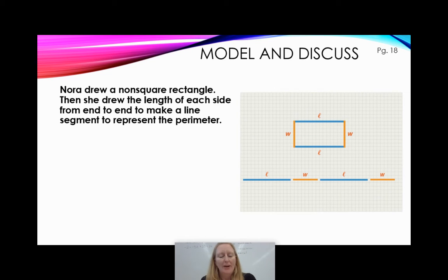So here we have Nora. Nora drew a non-square rectangle. Then she drew the length of each side from end to end to make a line segment to represent the perimeter. So she took this guy, and so she took the piece, piece, piece, piece. She just lined them all up end to end. So this, of course, represents the length of our perimeter. Good job, Nora.